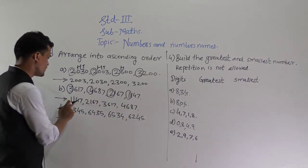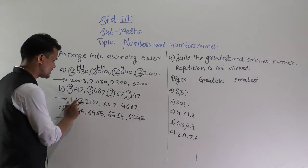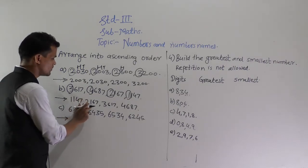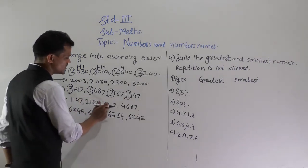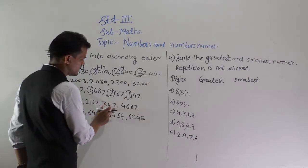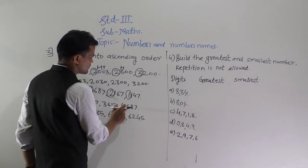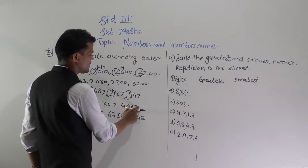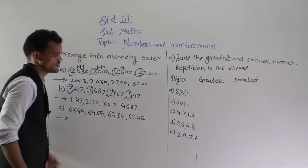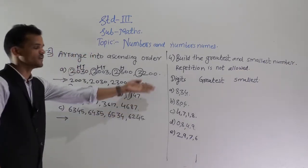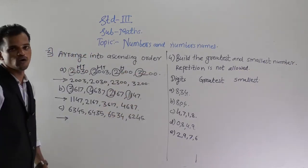The ascending order is: 1147, 2167, 3617, 4687. This is the increasing order.